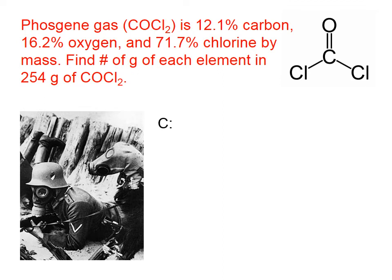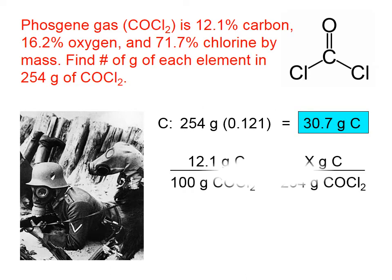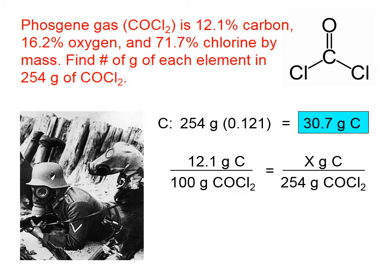Let's calculate the number of grams of carbon in 254 grams of phosgene. We take 254 multiplied by the decimal form of the percentage for carbon, giving us 30.7 grams of carbon. Many students prefer to use a proportion rather than decimal forms of percentages. What we mean by 12.1% carbon is that out of every 100 grams of phosgene, 12.1 of them are carbon. For a 254 gram sample, we cross-multiply and solve to get the same answer: 30.7 grams.